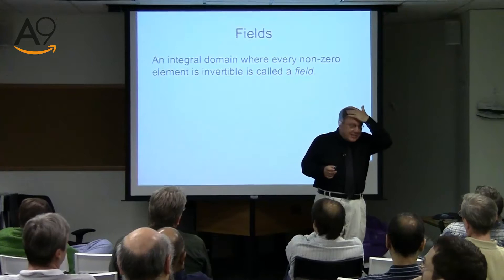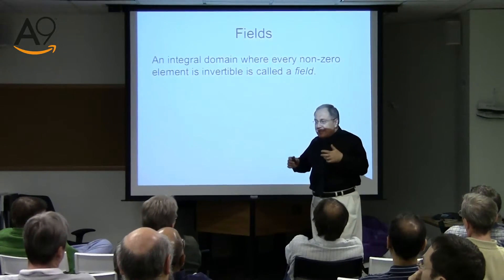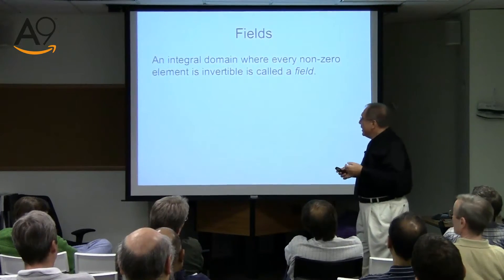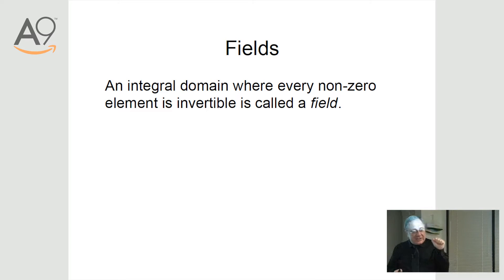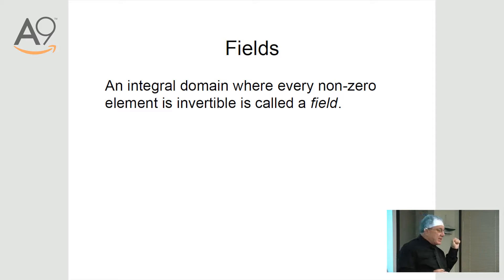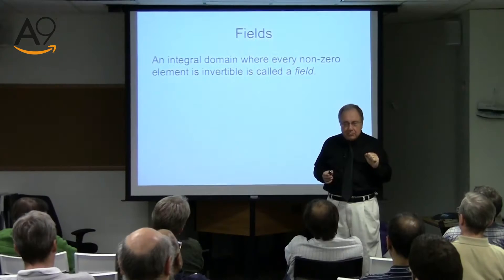Now we have to talk about one more thing. Mathematicians have difficulty finding names. The notion of a field — just as 'field of study' doesn't mean flowers growing — uses the word 'field' to mean a ring where every non-zero element is invertible. A canonical example is rational numbers: every p/q inverts to q/p, very simple.